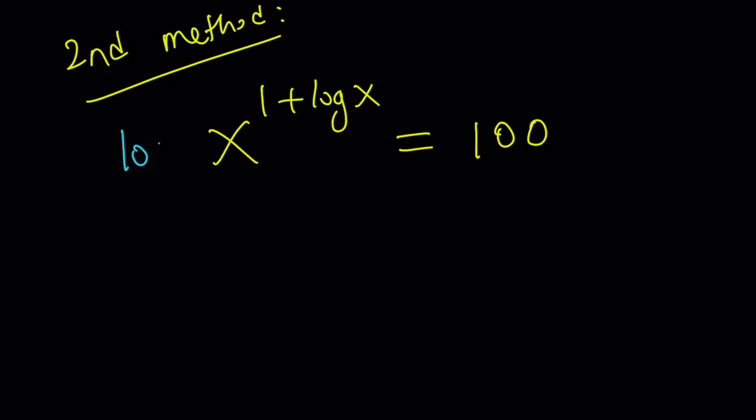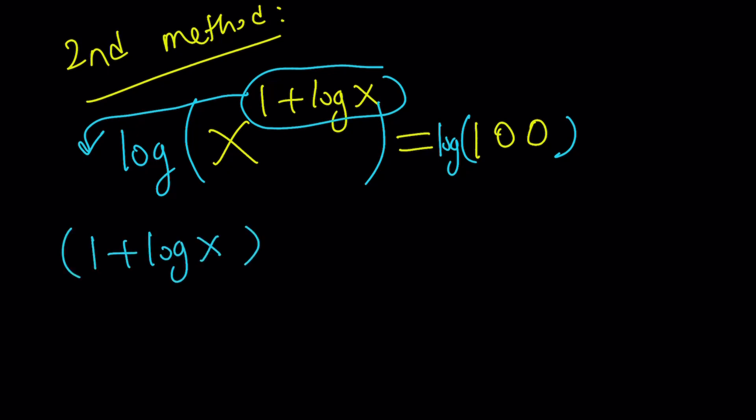So let's go ahead and log this and log that. Now, as you know, this is going to move to the front because that's the properties of logs, which is really cool. That's going to give us 1 plus log x multiply by log x equals log 100. But remember, 100 can be written as 10 squared. Again, the 2 can be moved and log 10 is equal to 1. So it's 2.